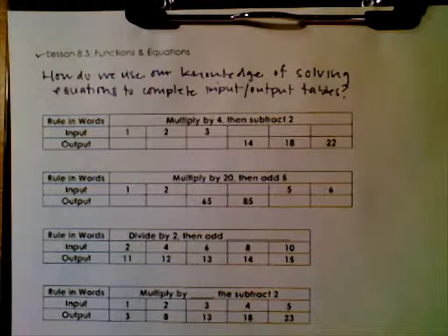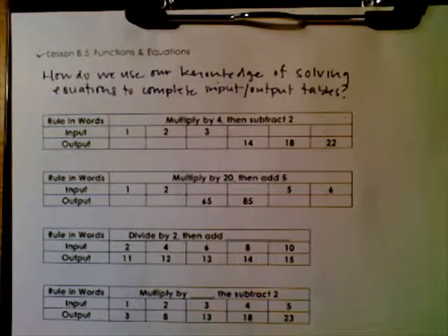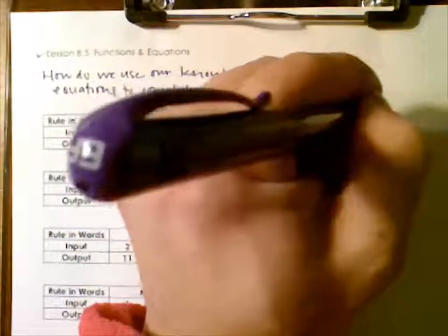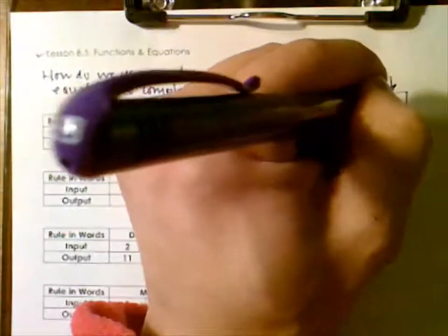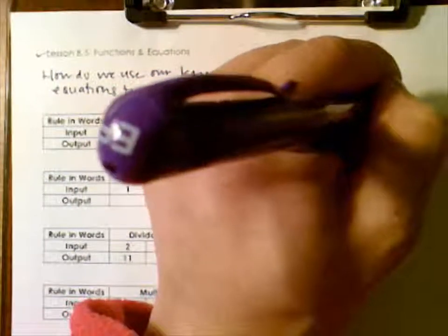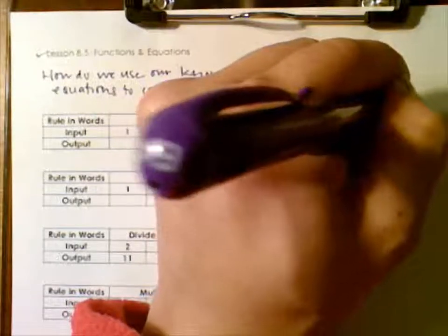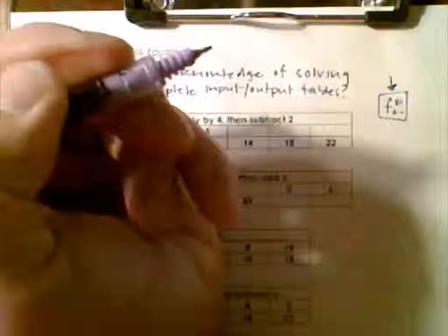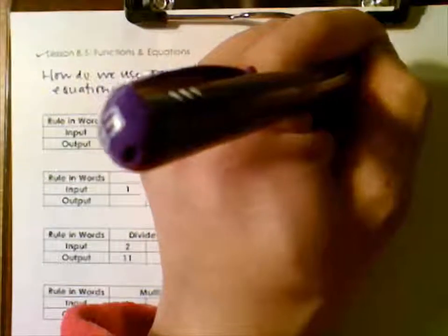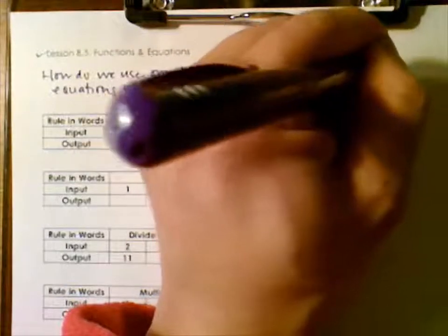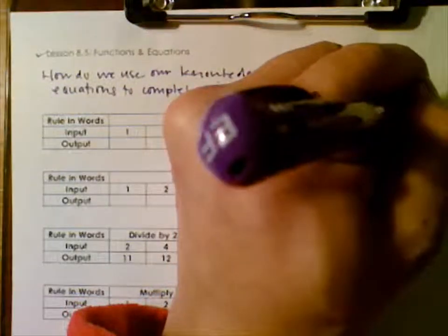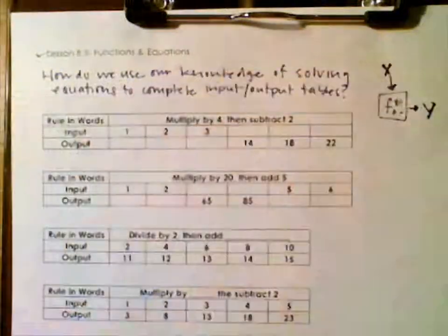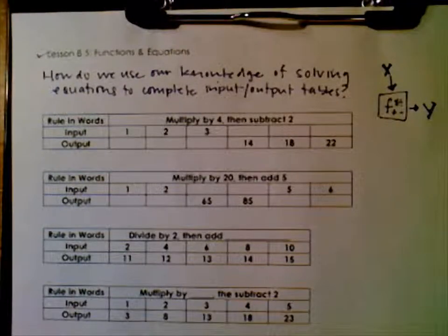Now if we don't understand input/output tables, think about having a box where a number goes in and then some sort of function happens to it. That's what this is called — a function. After something happens, whether it's multiplication, division, addition, subtraction, or a combination, a number comes out. The number going in is generally x, and what comes out is y — y has been affected by whatever is supposed to happen in that function.